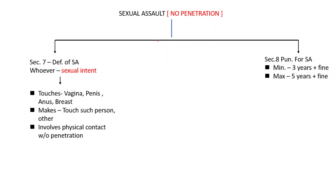Now let's go to sexual assault. We have talked about sexual assault — there is no penetration here. Section 7 gives the definition of sexual assault. Sexual intent is very important — without it, it will not become sexual assault. With sexual intent, the person touches vagina, penis, anus, or breast, or makes the child touch such body parts of such person or any other person.